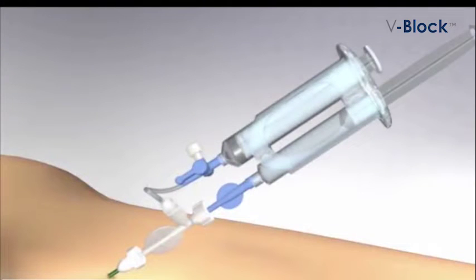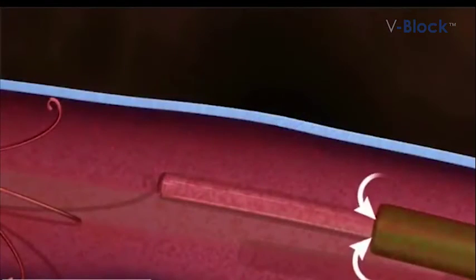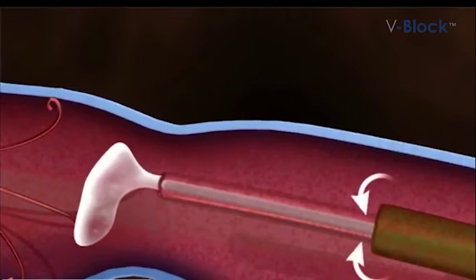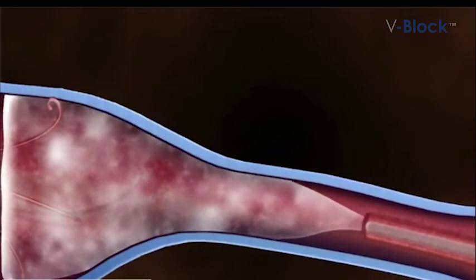At this point, the dual procedure syringe is connected to the sheath, and the sclerosant agent is injected through one syringe while blood is withdrawn simultaneously through the second syringe. This single-hand dual injection and aspiration continues as the sheath is slowly withdrawn to the level of the puncture site and removed from the body.